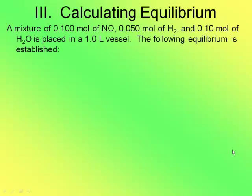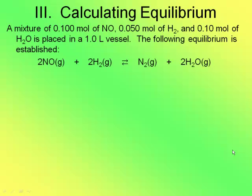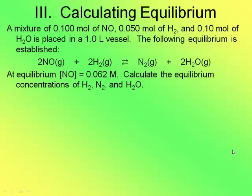So now let's look at a problem. A mixture of 0.1 moles of NO, 0.05 moles of H2, and 0.1 moles of H2O is placed in a 1 liter vessel. The following equilibrium is established. So here's the chemical reaction that is going to be established at equilibrium. Notice it's already balanced for you. At equilibrium, the concentration of NO is 0.062 molarity. Calculate the equilibrium concentrations of H2, N2, and H2O.